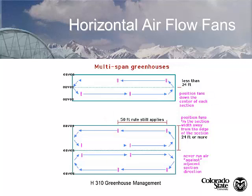In multi-span gutter-connected greenhouses where interior walls are open, we need a set of HAF fans in each bay because the gable won't allow air to move completely around. Set them so that air movement works together — for example, the top greenhouse runs counterclockwise and the bottom greenhouse runs clockwise, so the air goes together and doesn't create turbulence. It's more efficient this way — turbulence does not give more uniformity, you want the air moving together.